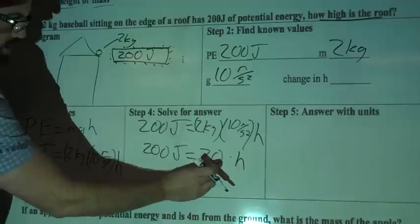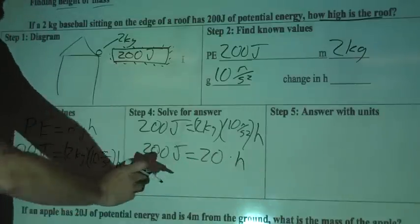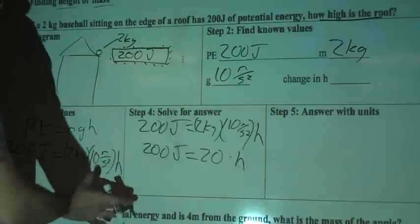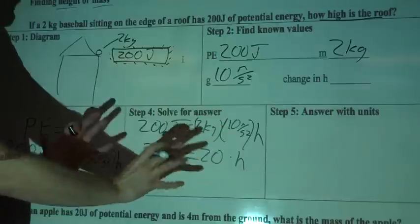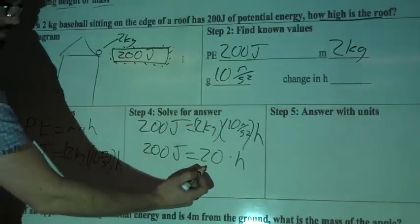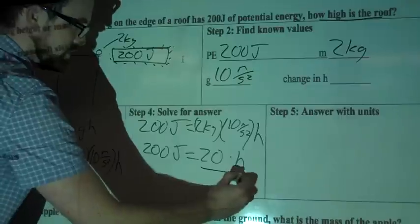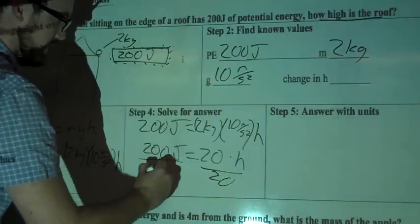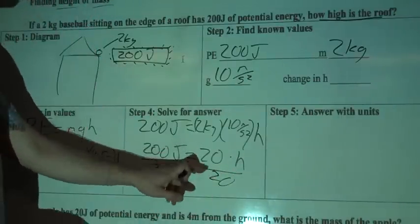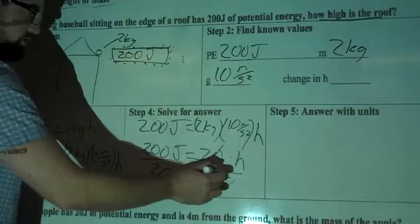So now we've got a number and a variable here, and numbers on this side. We want to get all the numbers to one side, all the variables to one side. There's only one variable, so this is pretty simple. So we're going to divide both sides by 20, so I can cancel this out. So divide this side by 20 and divide this side by 20. 20 over 20 cancels out, so I cross them out.